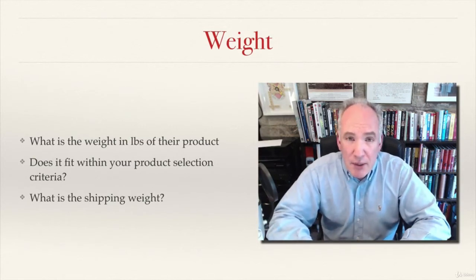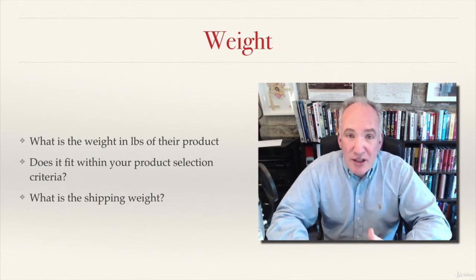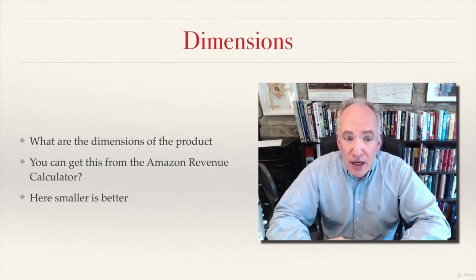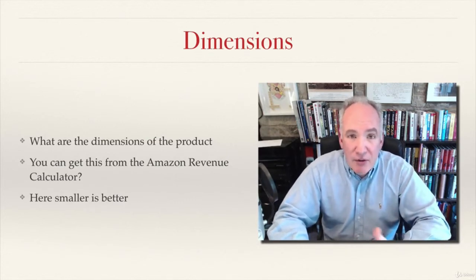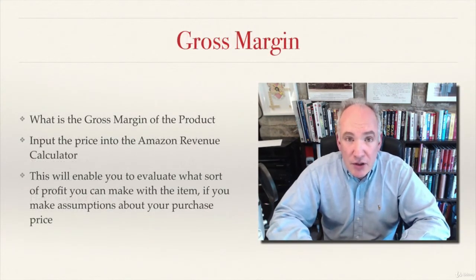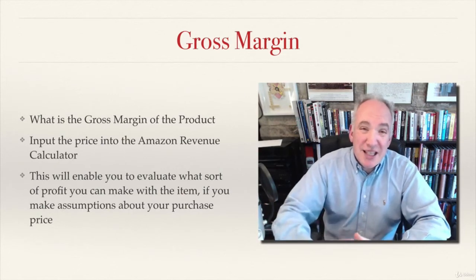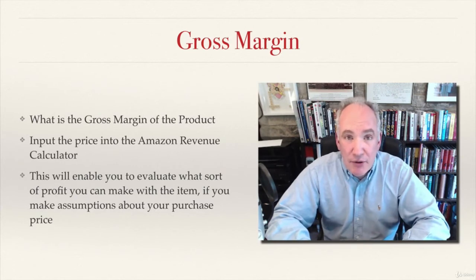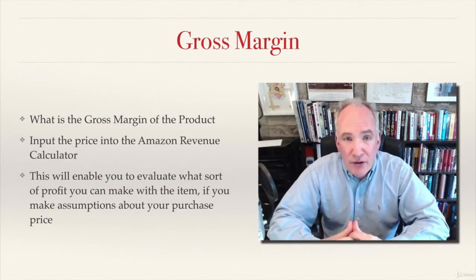Now we go into some of the more detailed product specifics, which are relevant because you want to make sure they conform to your product criteria. What is the weight in pounds, and does it fit within your product criteria? What's the shipping weight? You can also look at the dimensions — you can get those by putting it into the Amazon revenue calculator. You want something smaller rather than larger, so make a note of the dimensions.